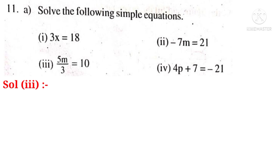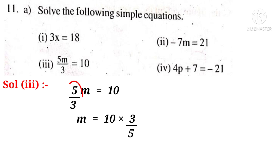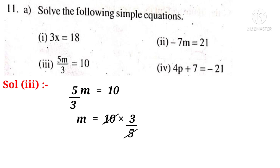Solution 3: 5 by 3m is equal to 10. Then, m is equal to 10 into 3 by 5. Because 5 by 3 when transposed to the right hand side, it becomes into 3 by 5. On simplification by 5, 2 times. So, m is equal to 6. Because 2 into 3 is 6.